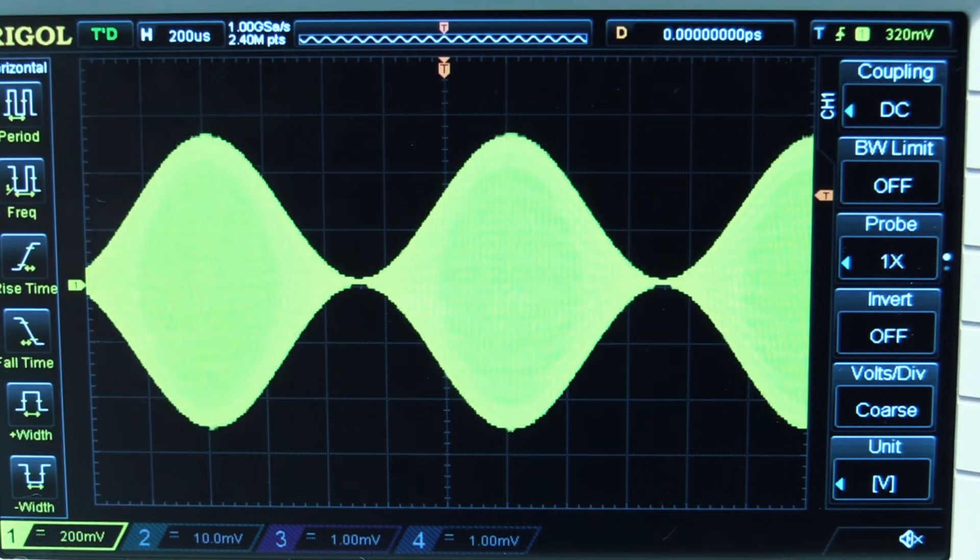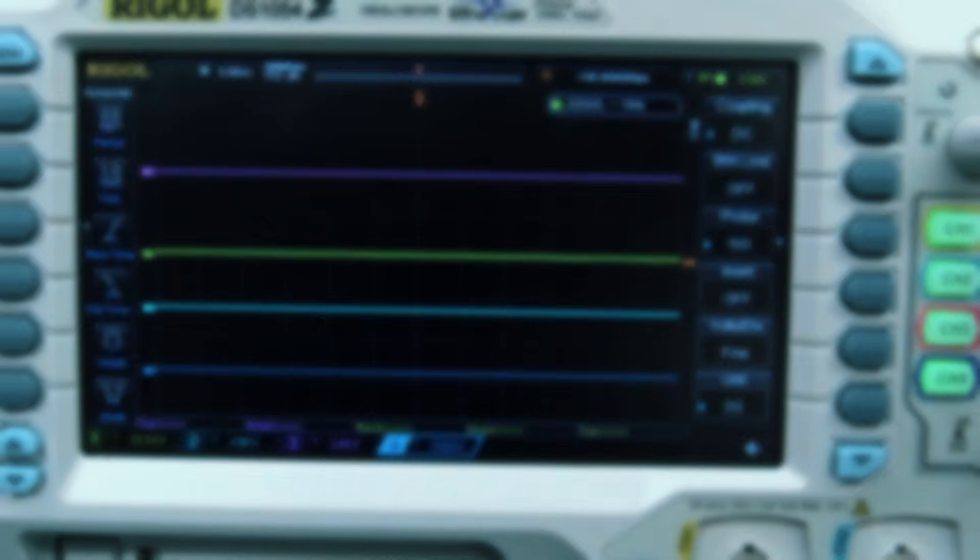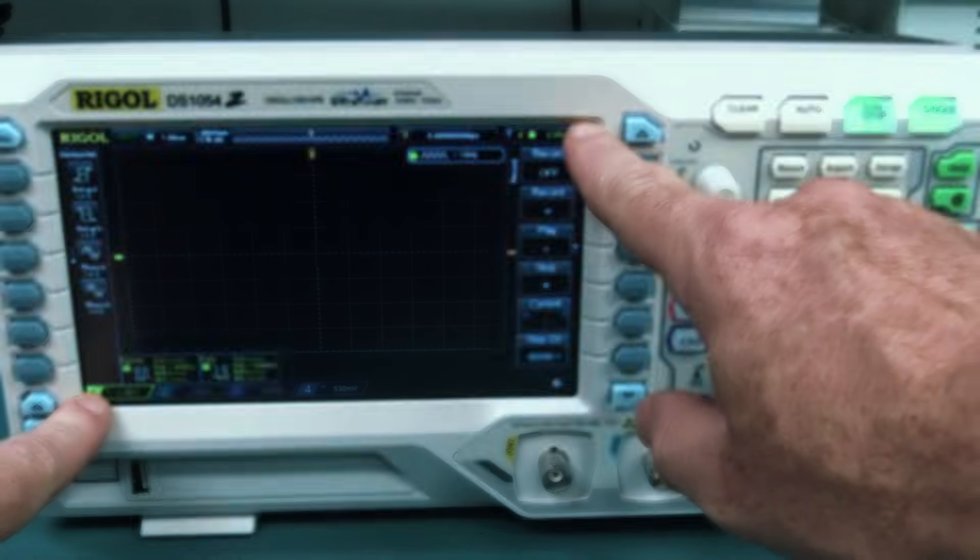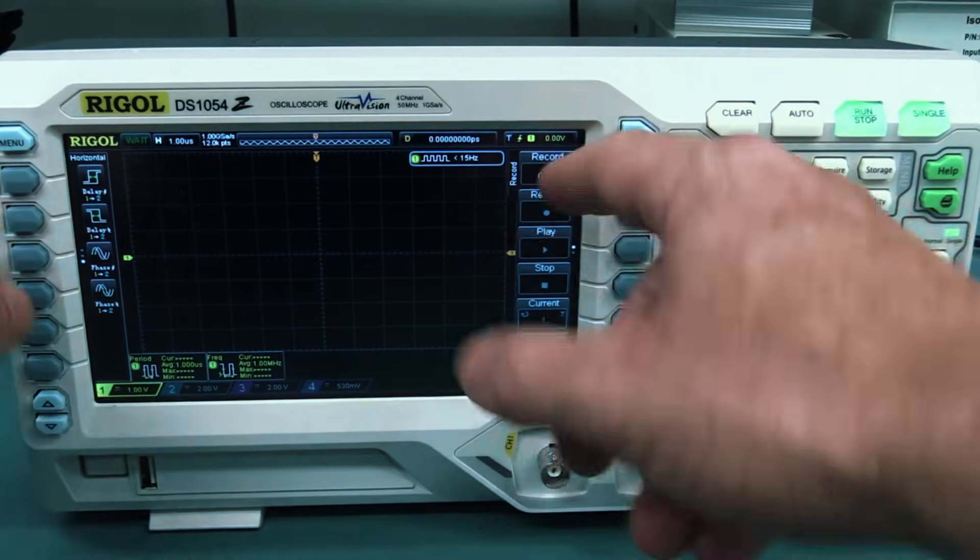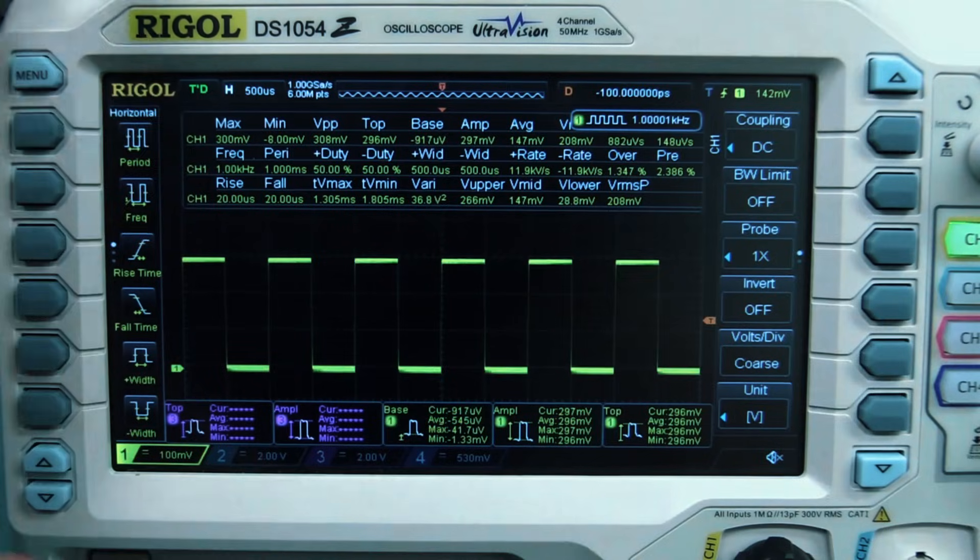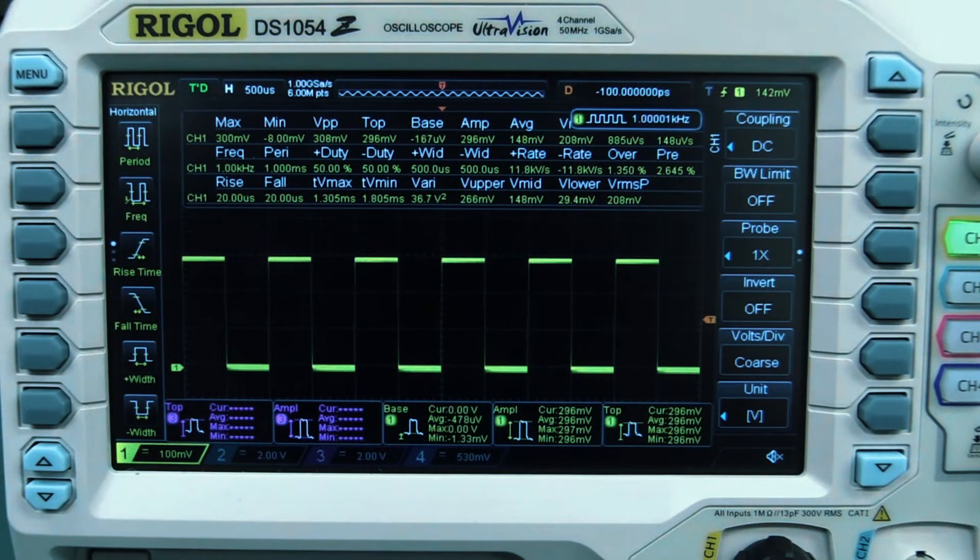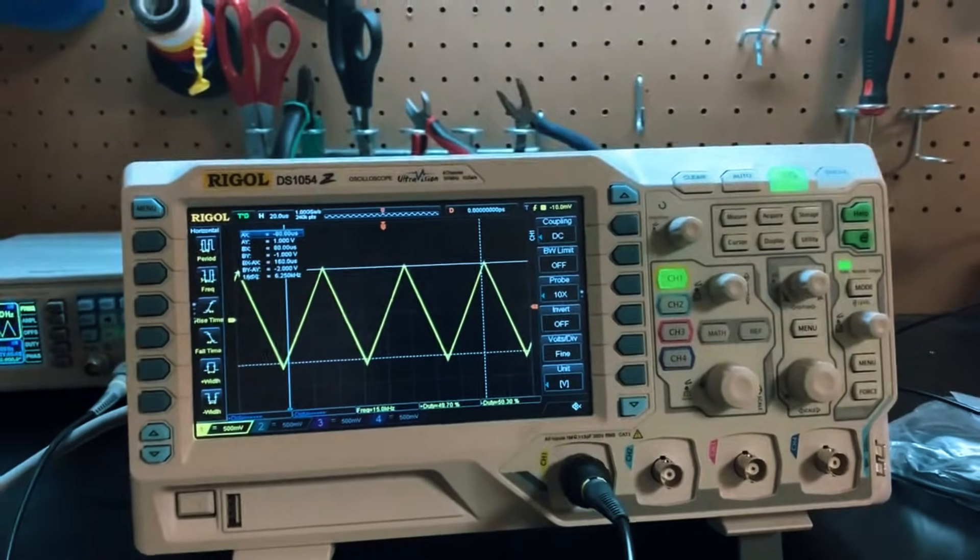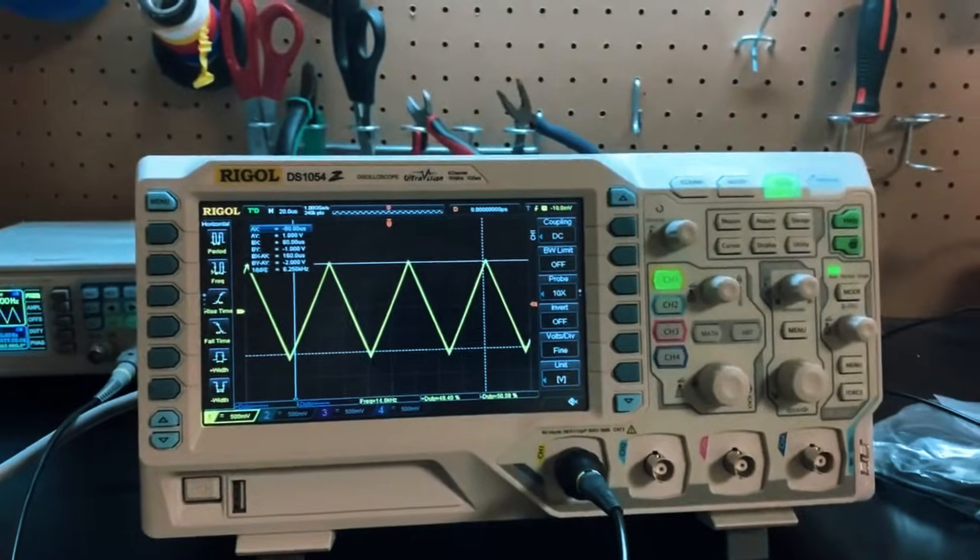If you're looking for a versatile future-proof oscilloscope that balances affordability with professional-grade features, the Riggle DS1054Z is hands-down one of the best choices. It's ideal for students, electronics enthusiasts, and professionals who want a high-performance scope without spending thousands. Whether you're working on DIY electronics, advanced circuit debugging, or embedded systems development, this oscilloscope delivers serious value and long-term usability.